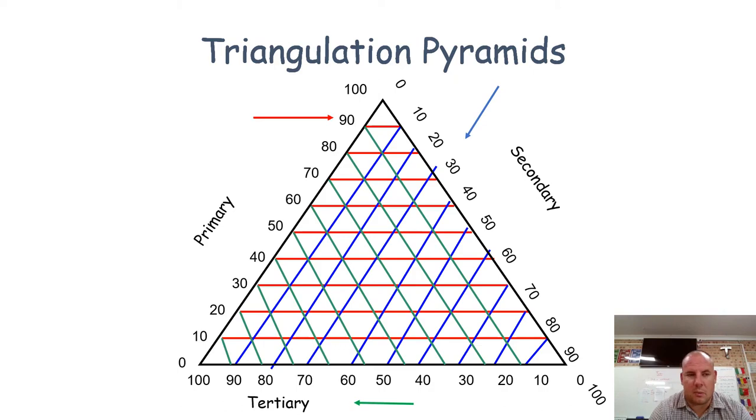When we read a triangular graph, we need to look at it very carefully. There are three different sides and therefore three different axes. When I'm reading primary, I'm looking at the red line, so I'm reading across.